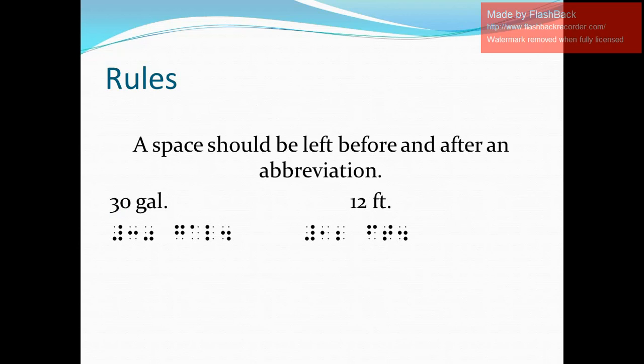The next rule states that a space should be put before and after the abbreviation. To show that, I have two examples. First is 30 gal or 30 gallons — that's 30, space, and then gal, space. Next is 12 feet: numeric indicator, digits one and two, space, ft, and then period.